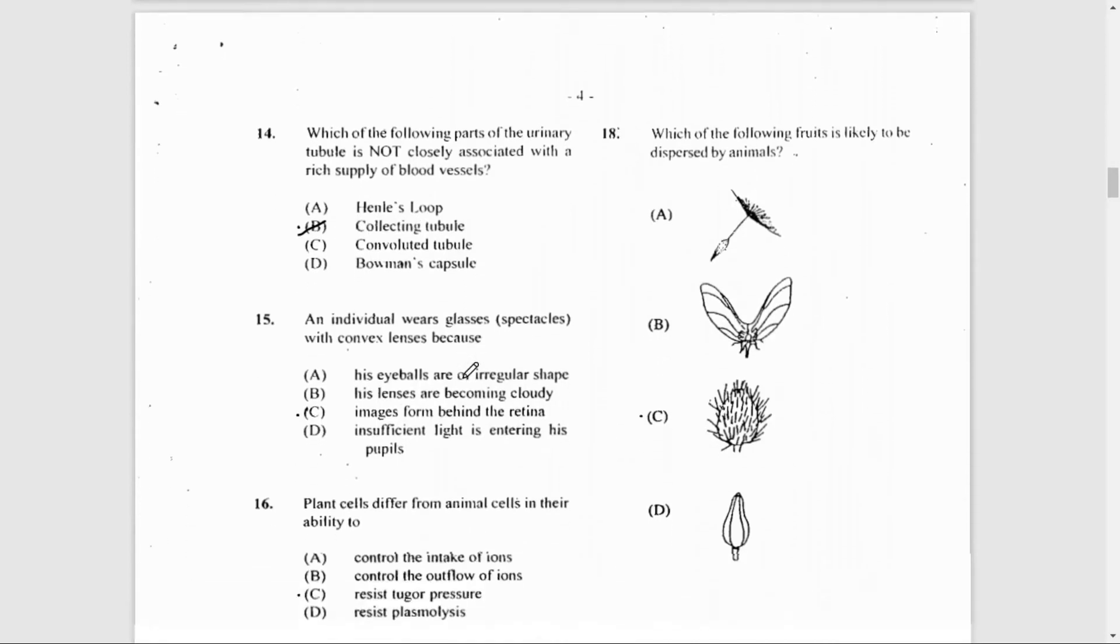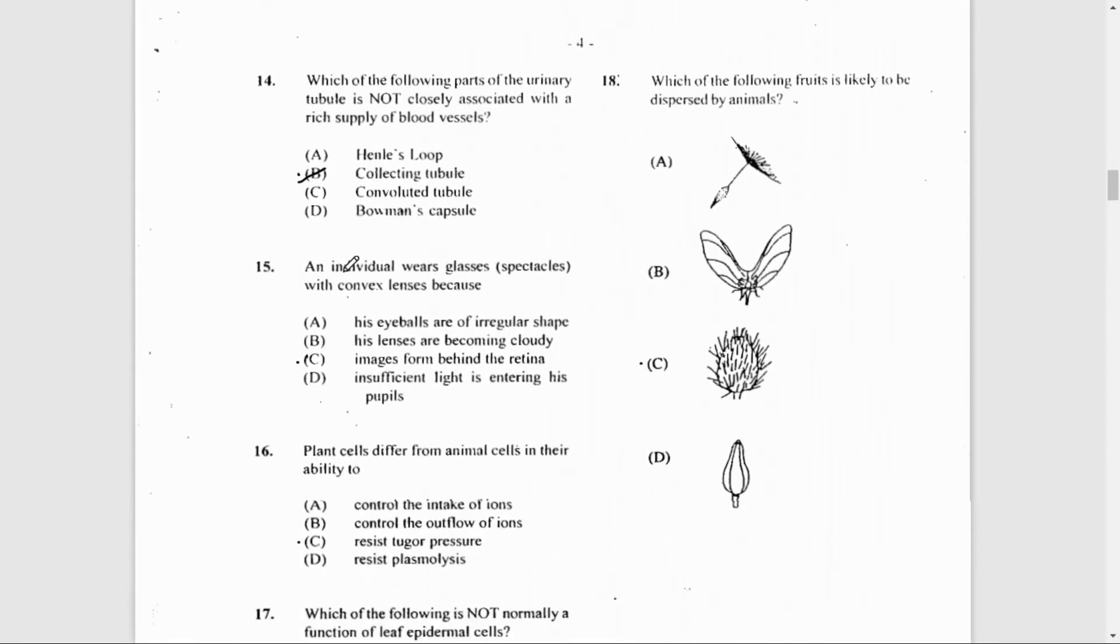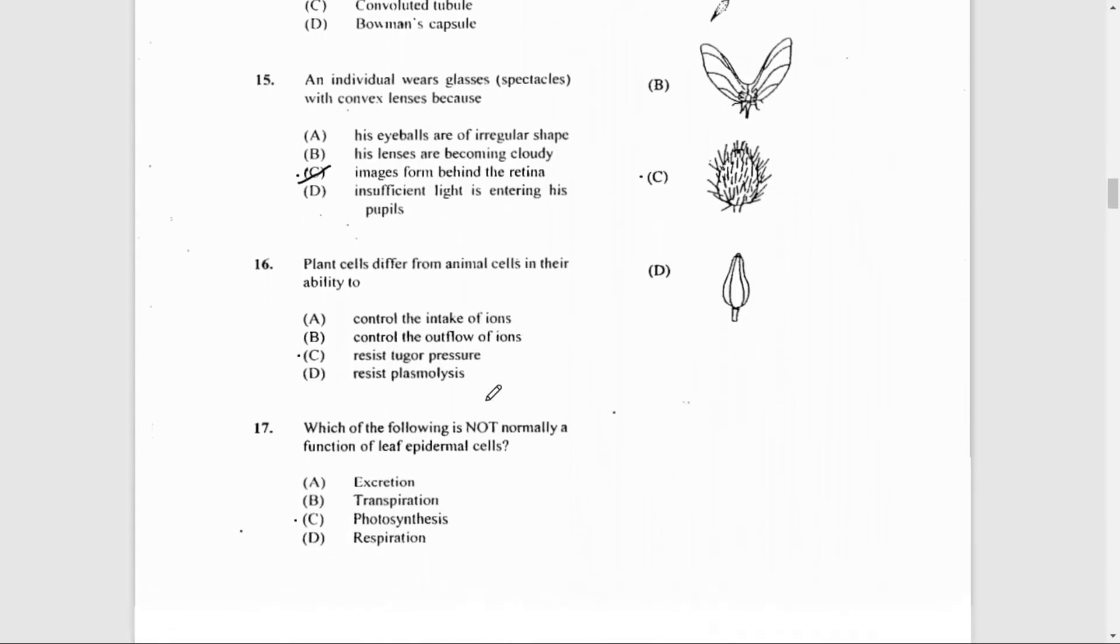Number 15: An individual wears glasses or spectacles with convex lenses. Why? The answer is C: images form behind the retina. The convex lens would help the image to form on the retina and not behind. If the image is forming in front of the retina, then in that case you would need a concave lens.